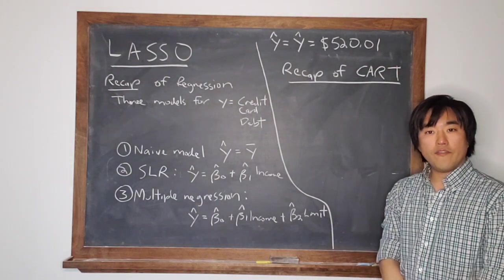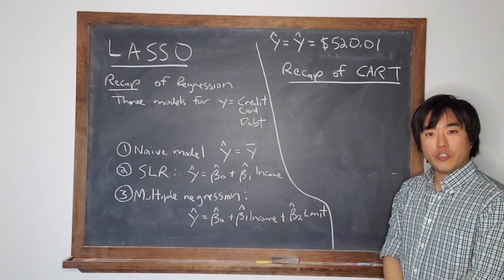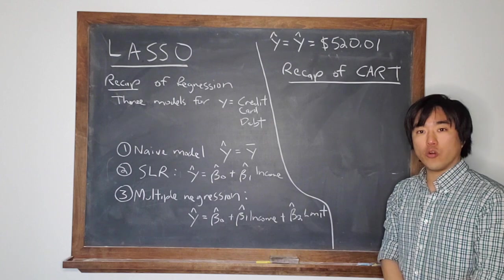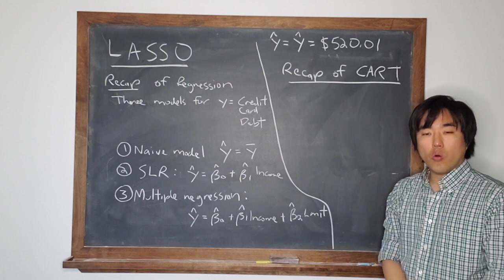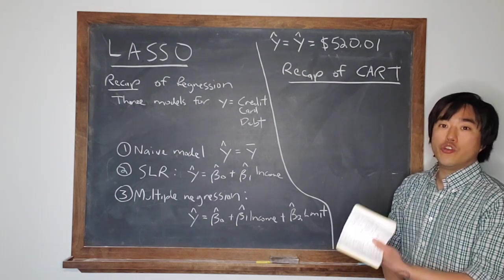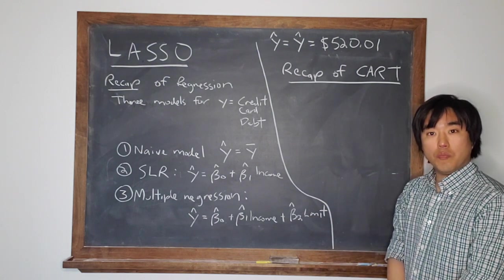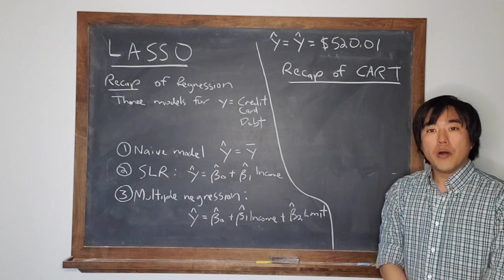Recap of CART. So recall that for a classification tree, which is when you have a Y categorical outcome variable, or a regression tree when you have a Y numerical variable—that's why these kinds of trees can do both. But in particular, I want you to remember...